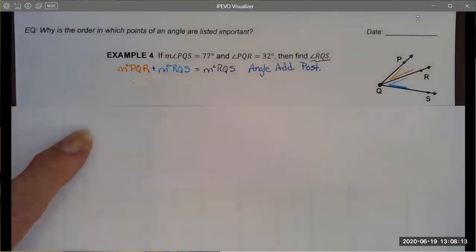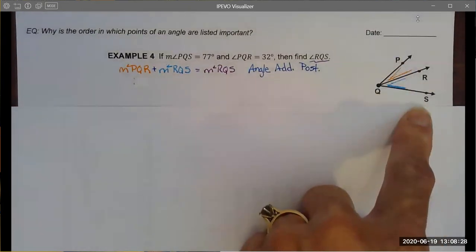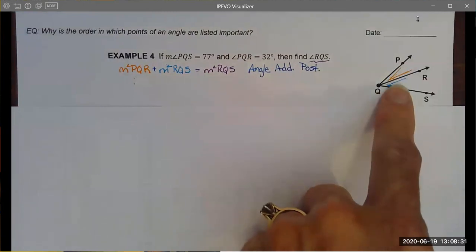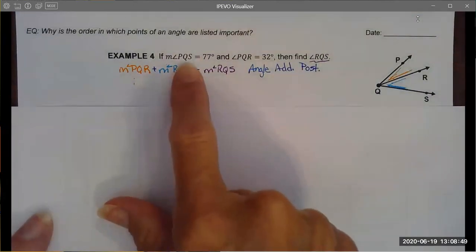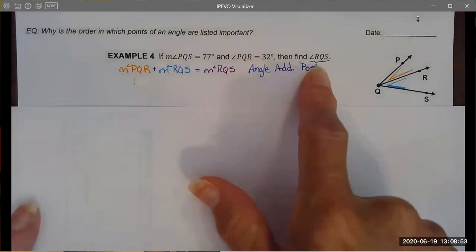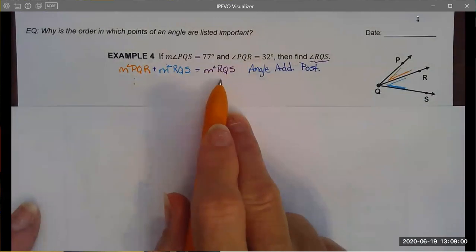In example four we are going to solve some problems that involve using that angle addition postulate. In this example we are given angle PQS which is the entire angle. We're also given the measure of PQR which is my orange angle, and it's asking me to find this blue angle, angle RQS. To do that we're going to use the angle addition postulate because I notice I'm given the whole angle measure, I'm given a part of the angle, and I'm asked to find the other part.